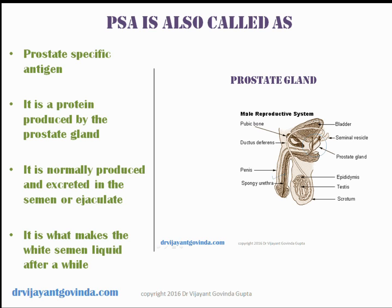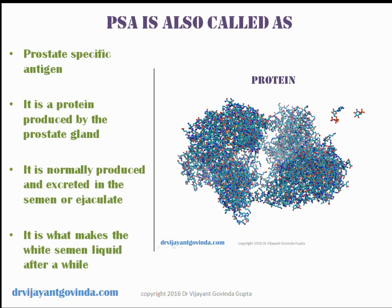The male genitalia is composed of the penis, the testes, the prostate, and the bladder. The testes produce the sperm which enters the prostate, and the prostate produces a lot of fluid which, along with the sperms, produces the semen that is ejaculated out. Out of this fluid produced by the prostate is a protein — the prostate specific antigen.